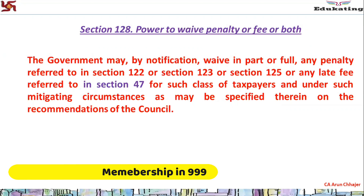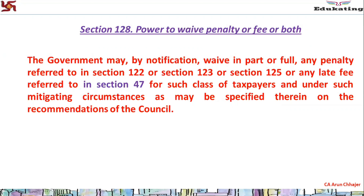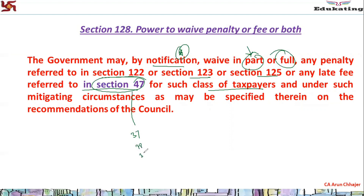All waiver notifications are issued under Section 128. Section 128 gives the government power to waive, in part or in full, any penalty referred to in Sections 122, 123, and 125, and any late fees referred to in Section 47 — for such class of taxpayers and under such mitigating circumstances as specified, on the recommendation of the Council. Under Section 47, we saw Sections 37, 38, 39, and 45 covered. The current notification issued a partial waiver of late fees only for Section 45 (GSTR 10).